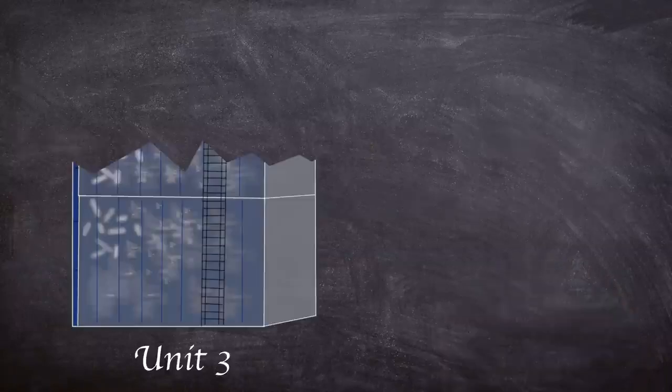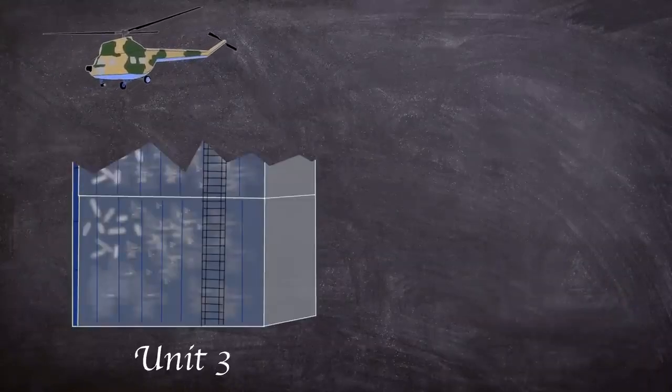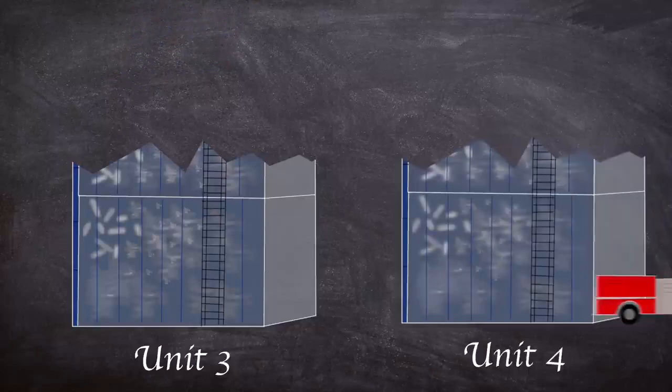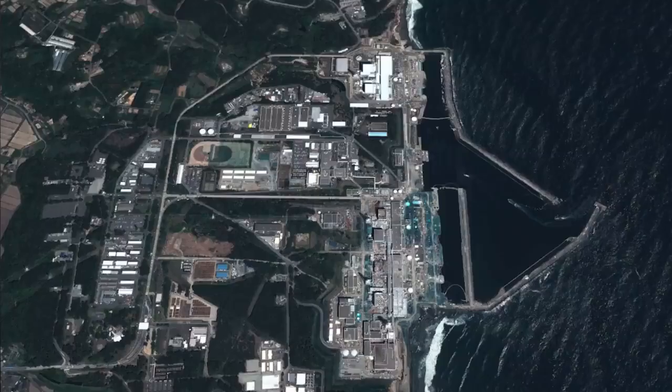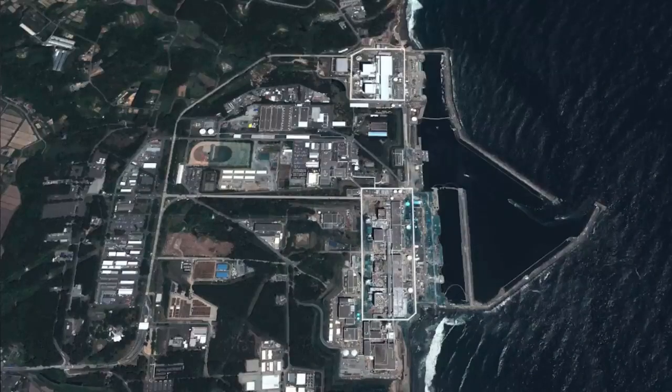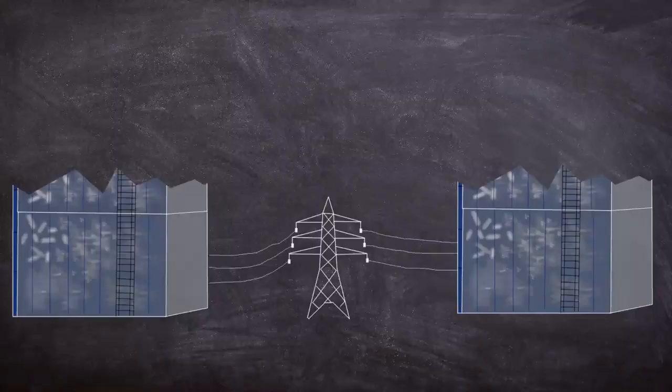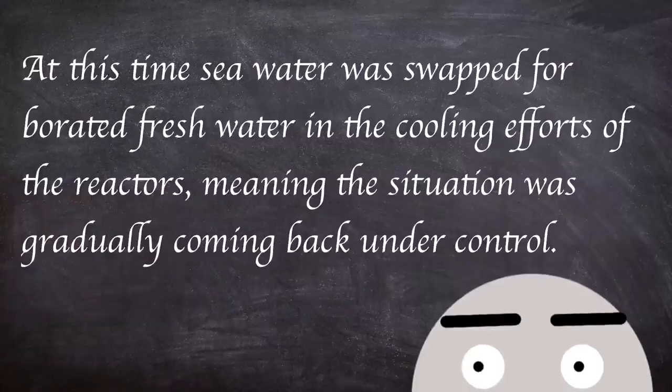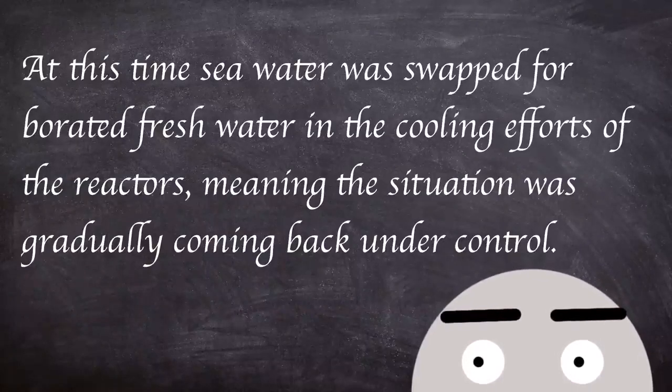Spraying started on the 17th with helicopters dropping around 30 tons of sea water. Later fire hoses and water cannons were used to fill the pool. Additionally on the 20th unit 4 received water spray as well. Later on into March power was gradually restored to units 1 to 4 with units 5 and 6 receiving power from the only working air cool generator. Units 3 and 4 were the last to receive power after being completely cut off for more than two weeks. At this time sea water was swapped for borated fresh water in the cooling efforts of the reactors meaning the situation was gradually coming back under control.